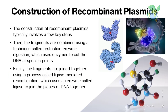Construction of recombinant plasmids typically involves a few key steps. First, the desired DNA fragments are obtained and purified. Then, the fragments are combined using a technique called restriction enzyme digestion, which uses enzymes to cut the DNA at specific points. Finally, the fragments are joined together using a process called ligase-mediated recombination, which uses an enzyme called ligase to join the pieces of DNA together.